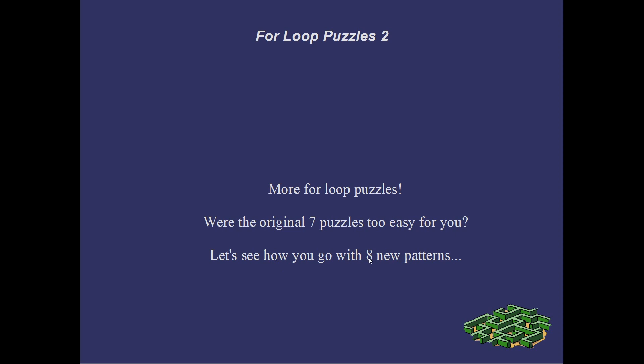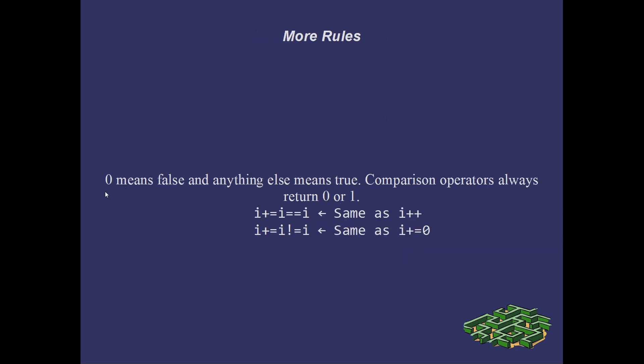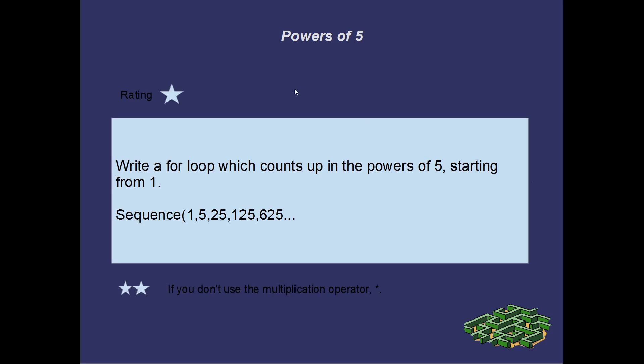So these are a little trickier. Well, some of them are anyway. A little extra tip that you might use. 0 means false, and anything else means true. And the comparison operators, the double equals and the not equals and that sort of thing, always return 0 or 1. As a byte, I believe, but then it's cast often to an integer. Or whatever you need. Anyway, that might come in handy. But on to the puzzles.